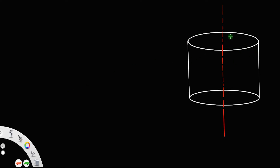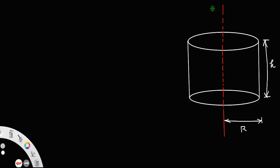Consider a solid cylinder of radius r and height h. We need to find the moment of inertia of this solid cylinder about the axis YY dash. The axis is along the axis of the cylinder, passing through the top and bottom circle through its center, and perpendicular to its base.